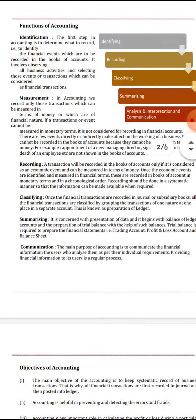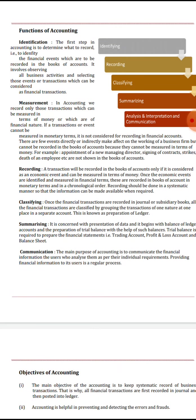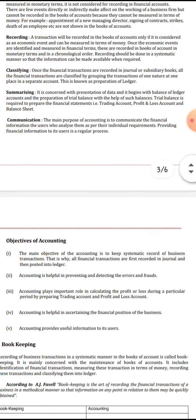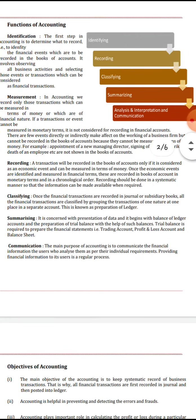So these are the steps and functions of accounting: first, identification — what we have to do; next, measurement — measuring profit or loss in terms of money; then recording — writing down what has happened; classifying — grouping expenditures and receipts; summarizing — totaling everything; and finally, communication — reporting profit or loss to the head or chief.